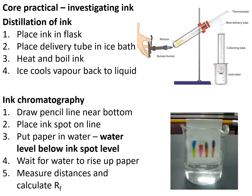The first part of the investigating ink practical involved distillation of ink. We had a boiling tube with some ink in the bottom and we heated it with a Bunsen burner. The vapours produced were passed out of a delivery tube into a second boiling tube that was sat in an ice bath. The ice bath produced a cold surface for the vapours to condense on, so it collects our liquid in the bottom of that boiling tube.